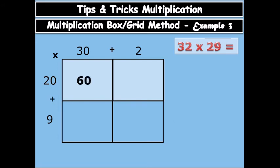So first, 30 times 20 is 600. Then we have 2 times 20 equals to 40. Then we have 30 times 9 is 270, and 2 times 9 equals to 18.